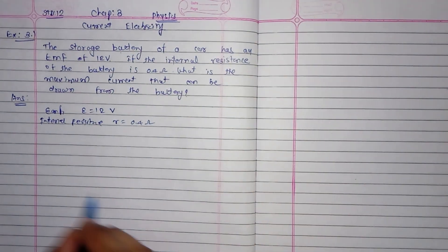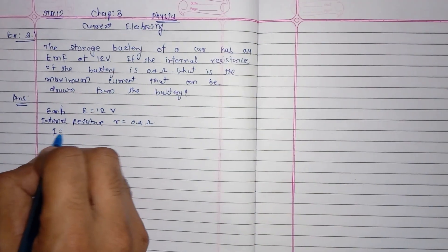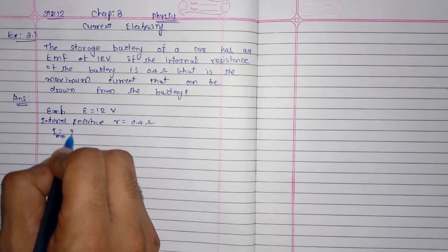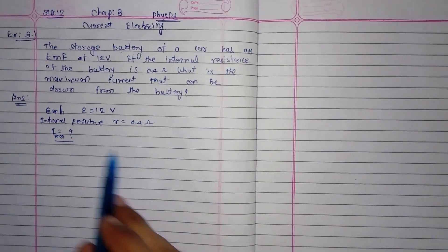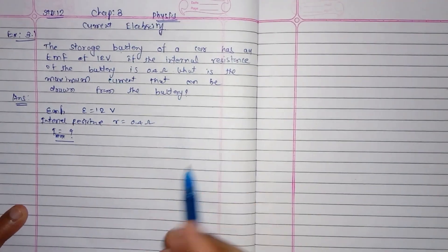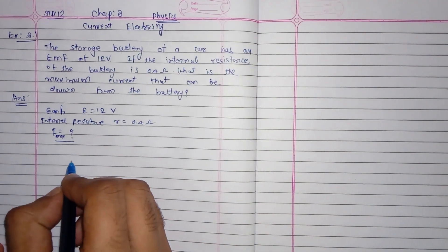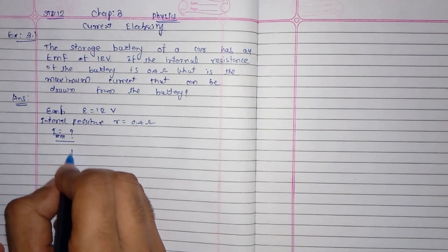Okay, so we have to find the I max value, the maximum capacity of current that can be drawn from the battery. As per the theory of internal resistance, we have seen that I is equal to EMF upon capital R plus small r.